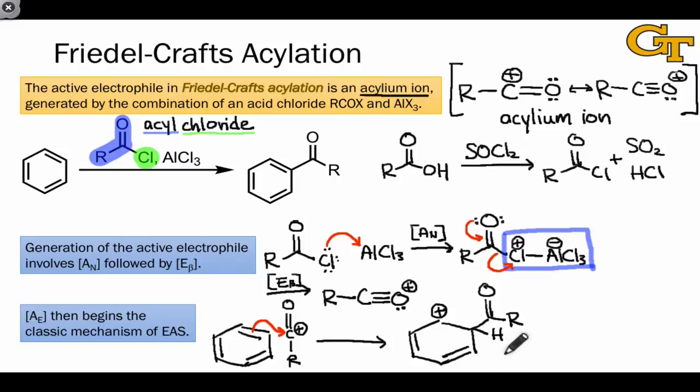To restore aromaticity, a Lewis base removes this extremely acidic proton from the intermediate, and in this case, just as in halogenations and in Friedel-Crafts alkylation, the AlCl4 minus anion is a great candidate.